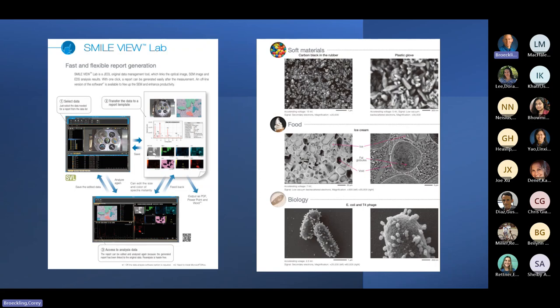You have this what they call smile view. It allows you to take your standard image, and then you can go and pick out the area you want to do, do EDS on it, do mapping, and then come back and create a report. On the right are just some standard examples from soft materials. Different types of materials are all available in the microscope.